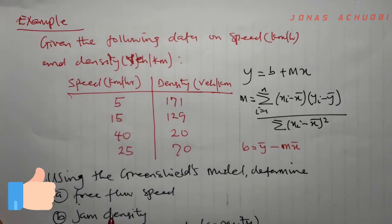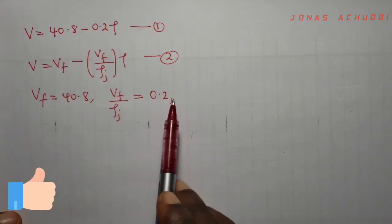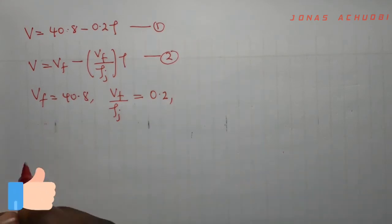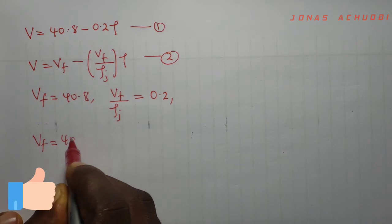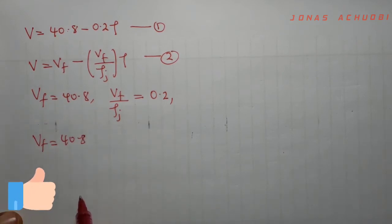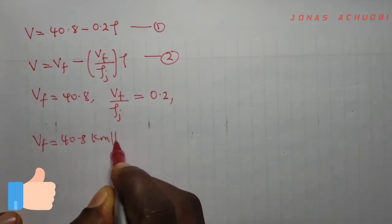We are asked to determine the free flow speed. From this comparison of equations 1 and 2, it is obvious that the free flow speed Vf is 40.8 km per hour.